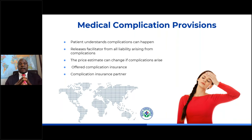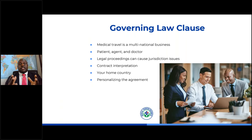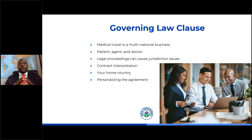We've gone a step further than just providing pre-made contracts — we've also partnered with a complication insurance company, so as a member, we can connect you with them as well. You also want to make sure that all your agreements have a governing law clause. Medical travel is a multinational business, and the patient, the agent, and the doctor can all be from different countries. If a lawsuit or legal proceedings happen, this can cause a jurisdiction issue. So you want the contracts interpreted in your home country, and in the governing law section you can simply put in your country to make sure you're in the best position if a lawsuit does happen.